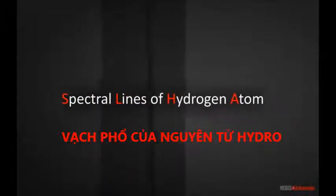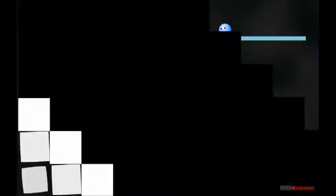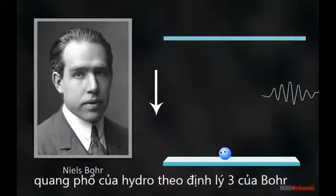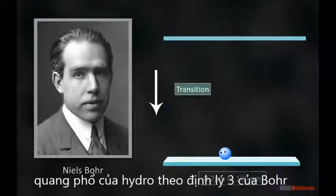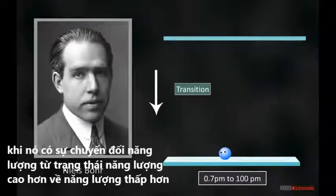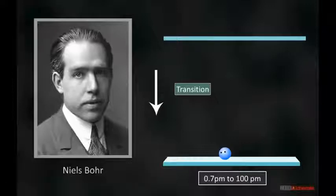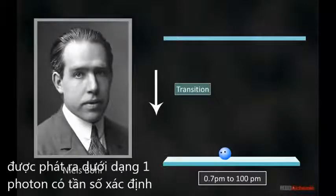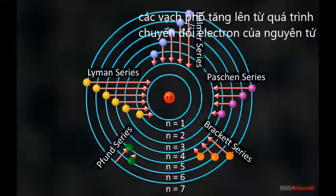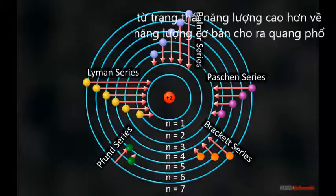Spectral Lines of Hydrogen Atom. According to Bohr's third postulate, when an atom makes a transition from the higher energy state to a lower energy state, the energy is radiated in the form of a photon having certain frequency. The spectral lines arising from the transition of electrons of an atom from higher energy states to a definite energy state form a spectral series.